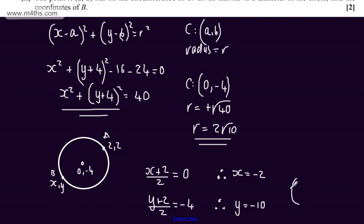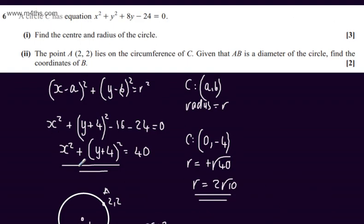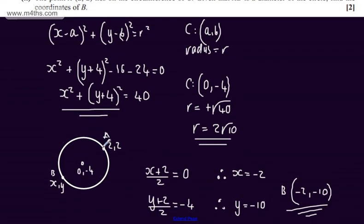So we can say that B has the coordinates minus 2 comma minus 10. I've done that algebraically, but you can also do it by simply considering the geometrical representation of these two points and working out the difference between them. Either way, the coordinates of B are minus 2 comma minus 10.